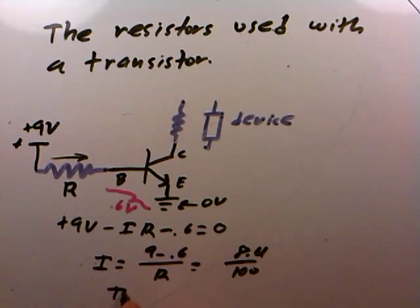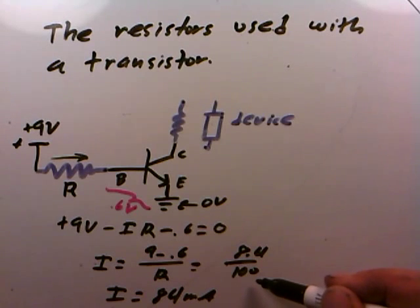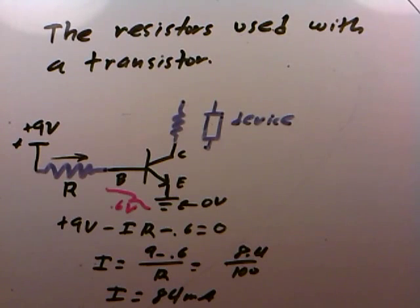Now if I solve that for the current, this will actually be the amount of current that's traveling through the base of the transistor out to the emitter right there. I'm going to get something like 84 milliamps. Because 8.4 divided by 100 is 0.084 and times 1,000 for converted to milliamps. We get about 84 milliamps. So what about that current? Is it high or low or what?